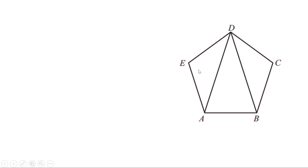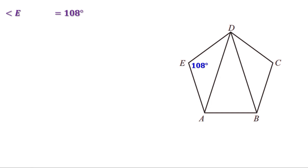Angle E is an angle in this regular pentagon, therefore angle E equals 108 degrees. Since it is a regular pentagon, all its sides are equal. Therefore, the sides DE and AE are also equal. That means in triangle AED, two sides are equal, so it is an isosceles triangle.